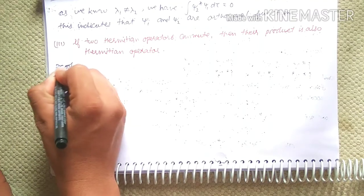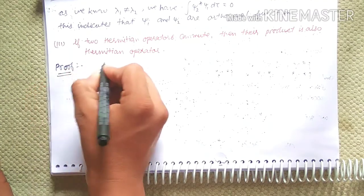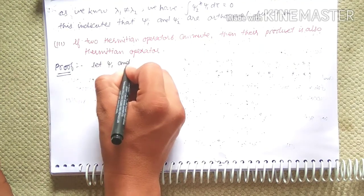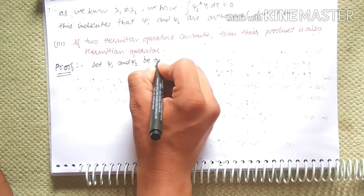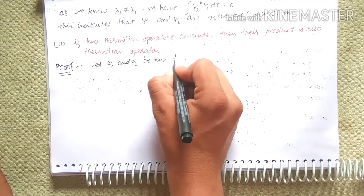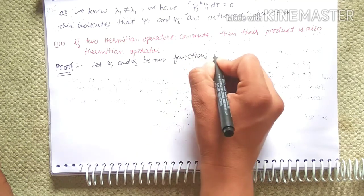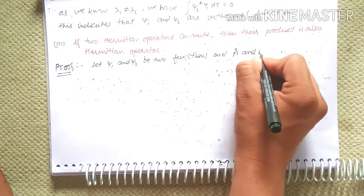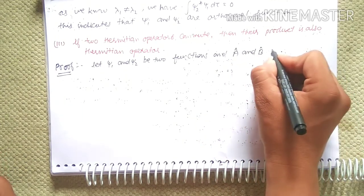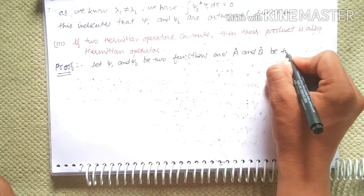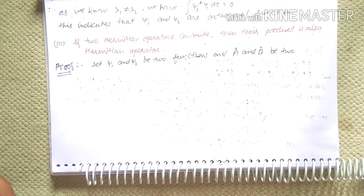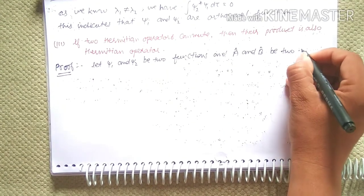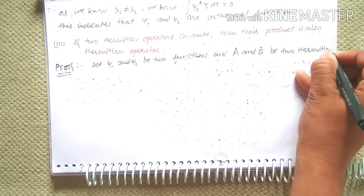Proof: Let chi-1 and chi-2 be two functions, and let A-hat and B-hat be two Hermitian operators.